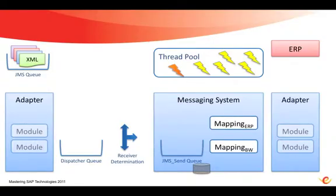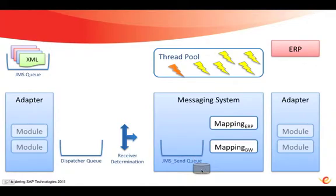Seeing an overview schematic of an advanced adapter engine scenario here, we have a JMS queue containing some messages, an incoming adapter, a dispatcher queue for prioritization, and receiver determination before we enter the messaging system and the adapter-specific queue with its persistence.